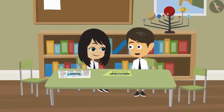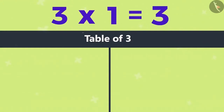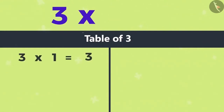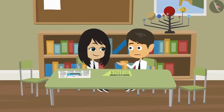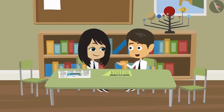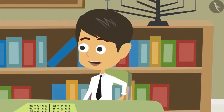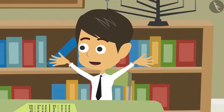We've written down the multiplication table of 3. Now let's memorize it so that we don't have to do these calculations. 3×1 is 3, 3×2 is 6. Hey, what are you doing? I am learning the table. No, you can't memorize tables like this. It is memorized in the form of a song.